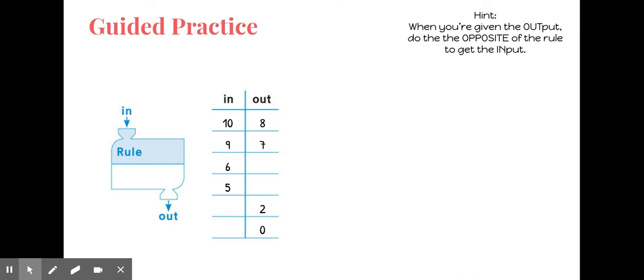Let's do one more where we have to find the rule. We do not know the rule, but we have an input and output for the first two rows. My numbers are getting smaller going from ten to eight and nine to seven, so that tells me it's subtraction. Ten minus what equals eight — that's two. Nine to seven is two hops, so I must be subtracting two. So six minus two equals four, and five minus two equals three. Now at the output: two plus two means I started with four, and zero plus two means I started with two.